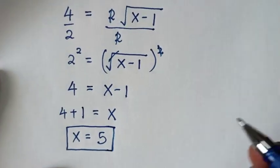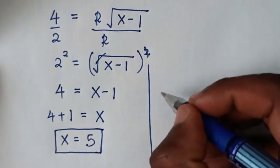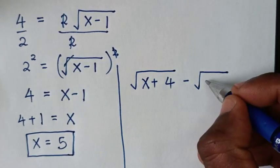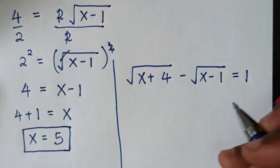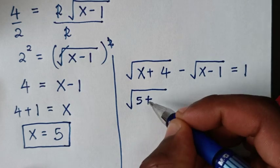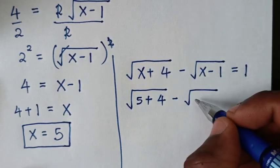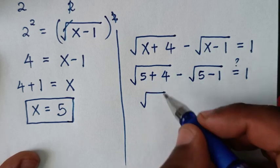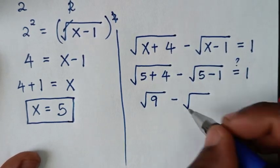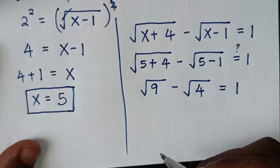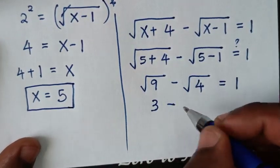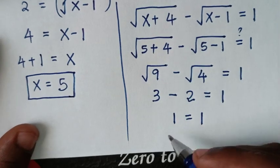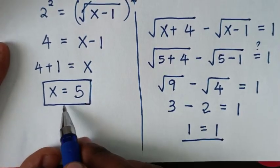Let's check this answer. Substituting x equals 5 into the original equation: square root of (5 plus 4) minus square root of (5 minus 1) equals square root of 9 minus square root of 4, which equals 3 minus 2, which equals 1. The left side and right side are equal, so it is true. The value of x equals 5 is confirmed correct.